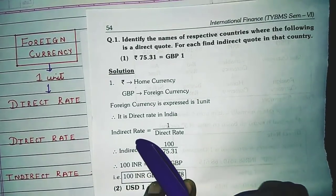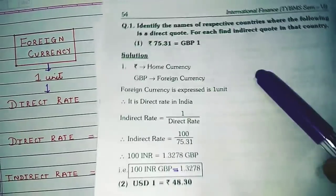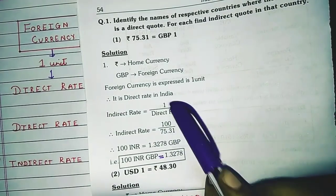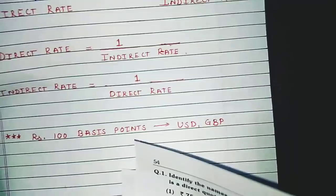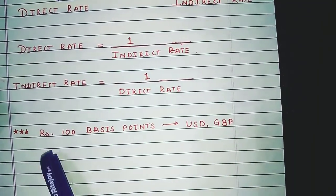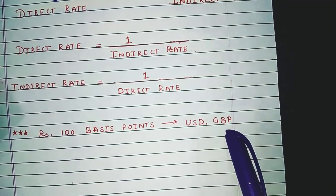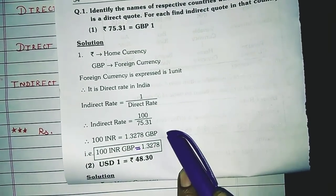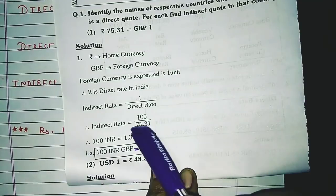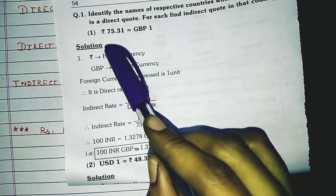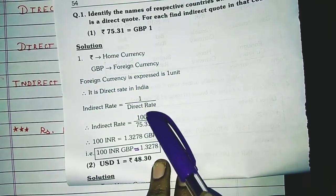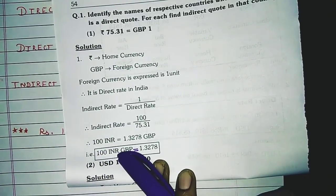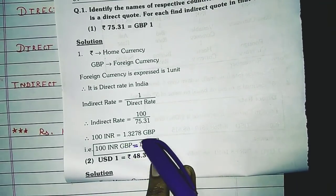To convert this direct rate into an indirect rate, the formula is: indirect rate = 1 divided by direct rate. But since we are dealing with Indian rupees and GBP, we use 100 basis points. So indirect rate = 100 divided by the direct rate, which is 75.31. Therefore: 100 INR = 1.3278 GBP.